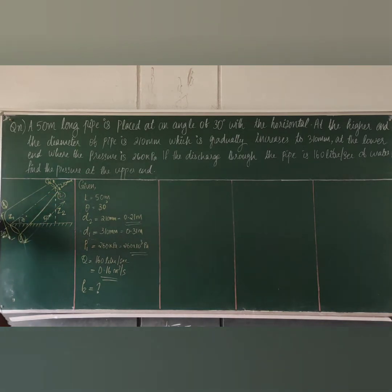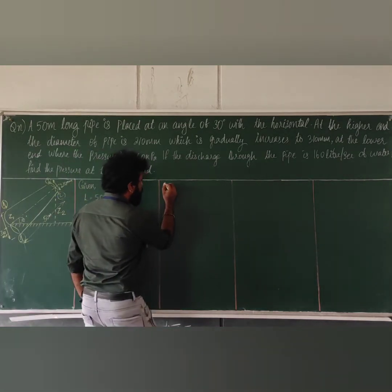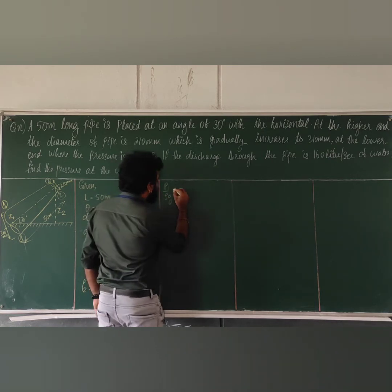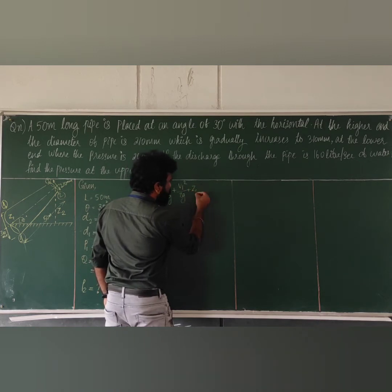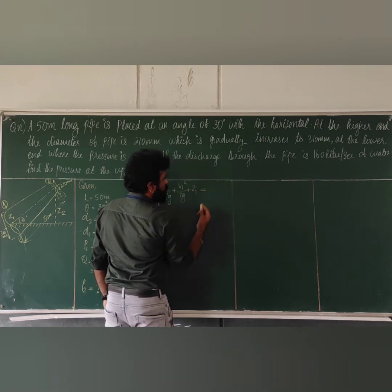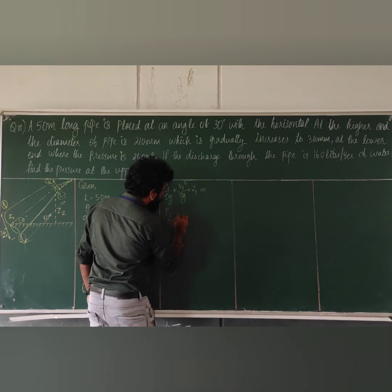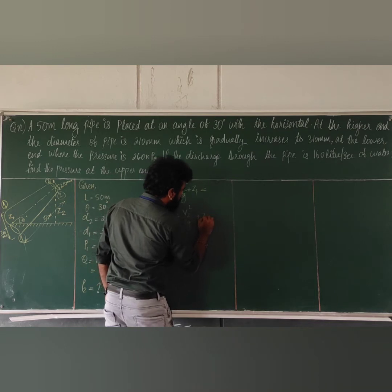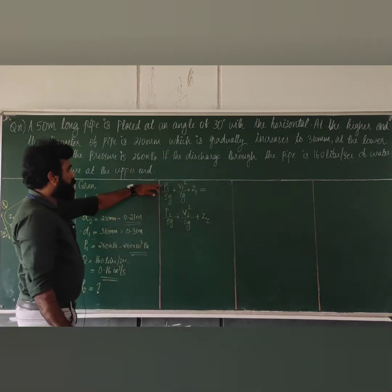Now we apply Bernoulli's equation. The equation is: P1 over rho·g plus V1 squared over 2g plus Z1 is equal to P2 over rho·g plus V2 squared over 2g plus Z2.